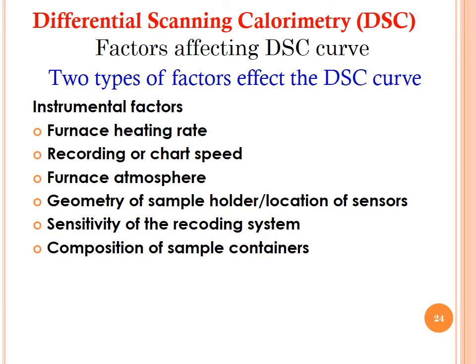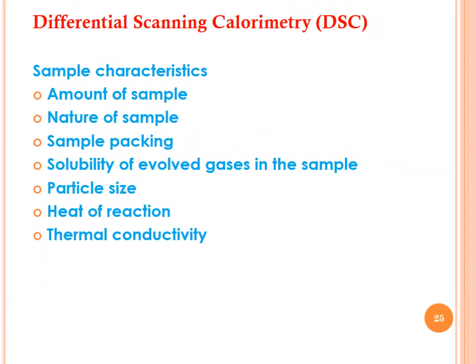Various factors affect the DSC curve. Instrumental factors include furnace heating rate, recording speed, furnace atmosphere, geometry of the sample holder, location of sensors, sensitivity of the recording system, and composition of sample containers. Sample characteristic factors include the amount of sample, nature of sample, sample packing, solubility of evolved gases in the sample, particle size, heat of reaction, and thermal conductivity.